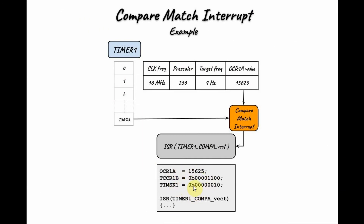Looking at the C++ code, the calculated integer value is stored in the output compare register for Timer 1. An 8-bit value is stored in the timer counter control register defining the prescaler value. A byte is stored in the timer interrupt mask register (TIMSK1) to enable the compare match interrupt. Once an interrupt occurs, the interrupt service routine is called and the code within is executed. All of this must be inside the setup function within the Arduino code.